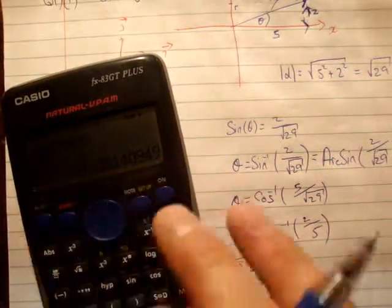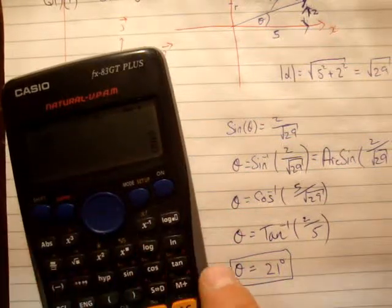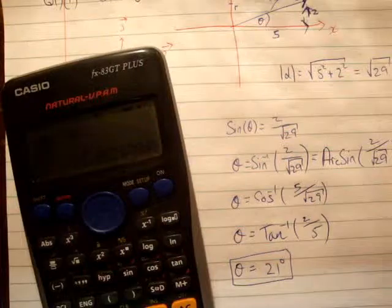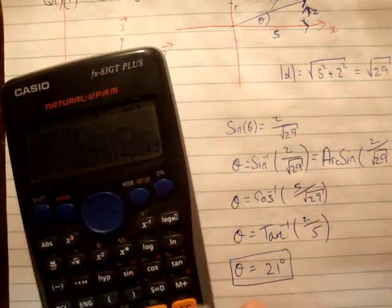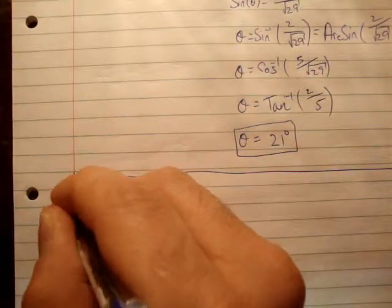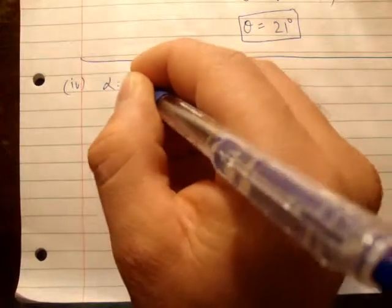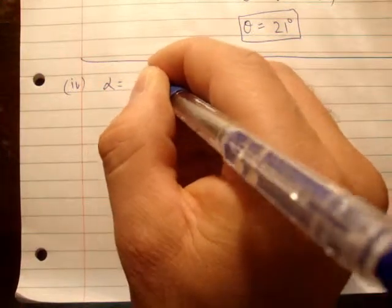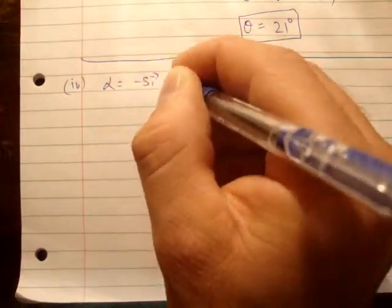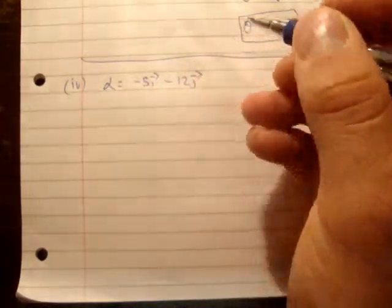Let's just show you something here — using inverse tan, you get the same answer. So that's how you check it: three ways of getting it. That's that one done. Next, I'm going to do part 4. So this one, alpha is equal to minus 5i hat plus minus 12j hat.